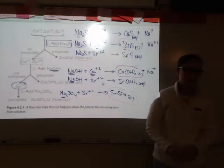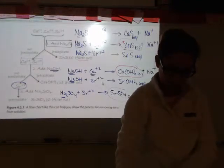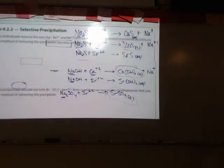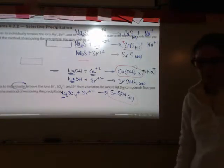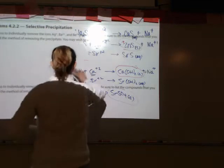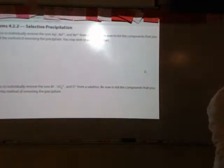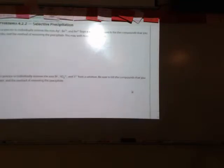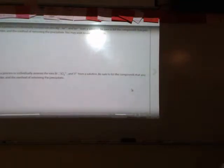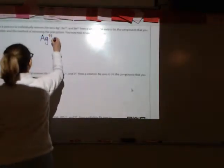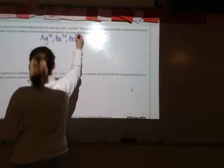Okay, so if I give you something like this as a bonus question on a test, could you do it? Okay, all right, let's move on. All right, do you want to try one with me? Let's try number one here. Describe a process to individually remove the ions, silver, barium, and beryllium, from a solution. Be sure to list the compounds that you add in order and the method of removing the precipitate. You may wish to use a flow chart. So let's use a flow chart. So we're going to have silver, barium, and beryllium.